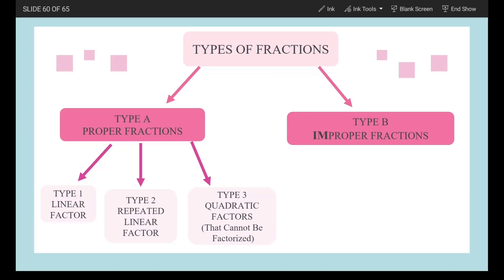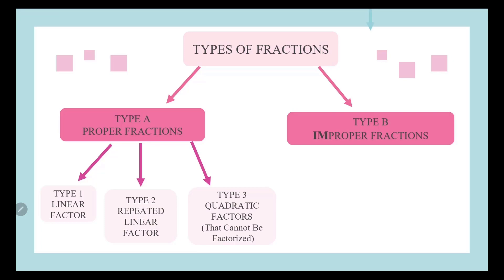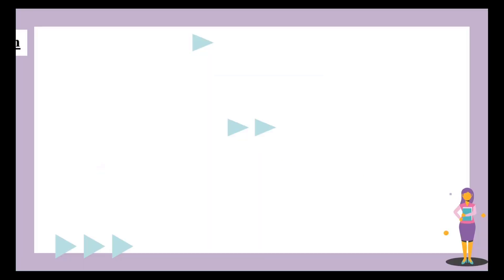We also have improper fractions. Improper fractions are when the numerator is greater than the denominator. So if we get an improper fraction, we will start with long division. The long division will change our fraction to a proper fraction. Once it becomes a proper fraction, we will start back with recognizing whether the factors are linear, repeated linear, or quadratic that cannot be factorized.